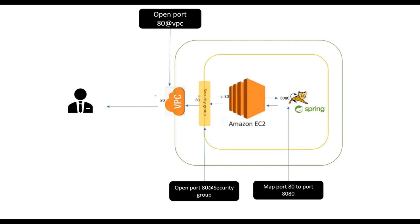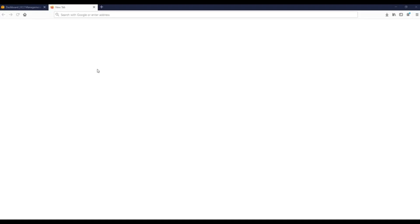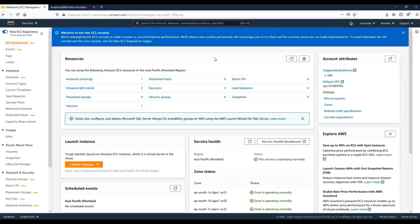So this is all we are going to do. Let's go to the lab where I will be creating a new EC2 instance and deploying a sample Spring Boot application. For the lab exercise I have a demo application — if I hit this endpoint you can see it returns 'hello cloud and tech'. It's a simple GET API in my sample Spring Boot application.